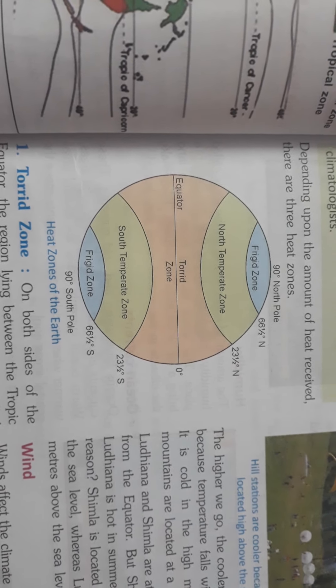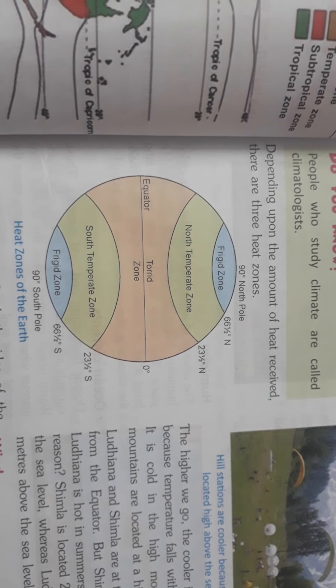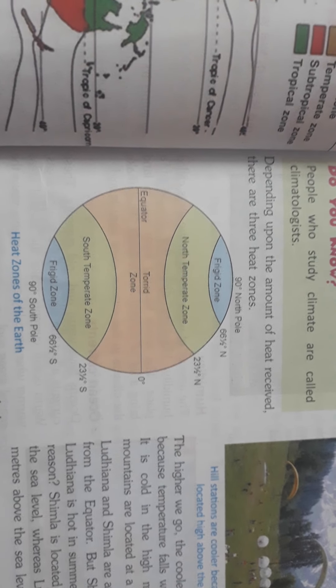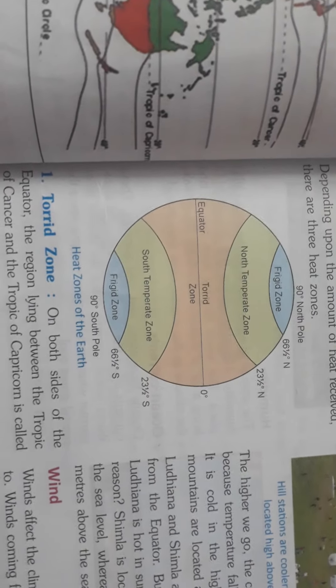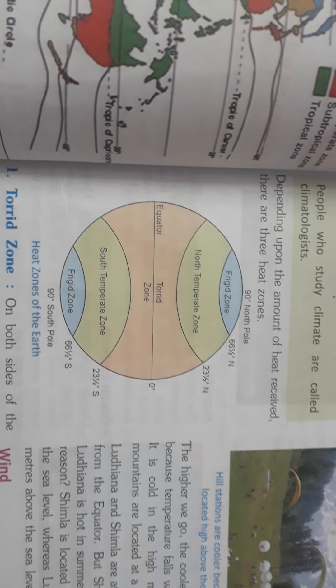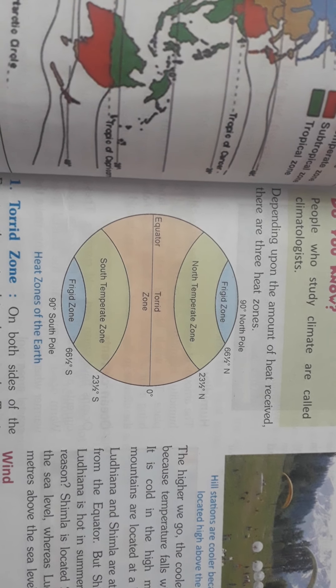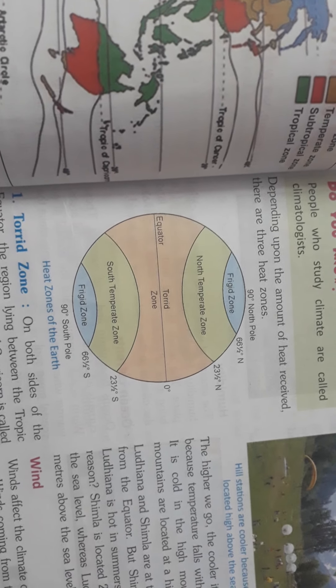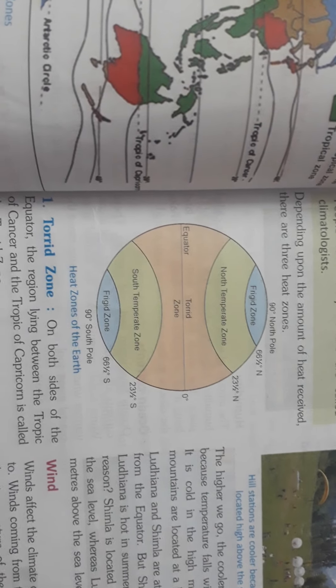There are three heat zones of the earth. The first one is the torrid zone, the second one is the temperate zone, and the third one is the frigid zone. As we studied earlier, the parallels of latitudes divide the earth's surface into three different heat zones.